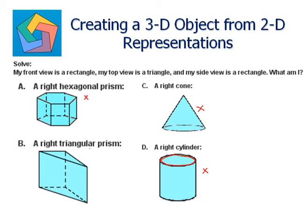Let's look at the right triangular prism. The front view is a rectangle — this is a rectangle. The side view is also a rectangle. And the top view is a triangle — this is the top view triangle. So B, a right triangular prism, is our answer.